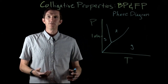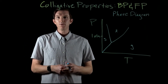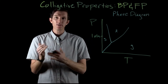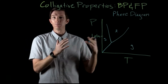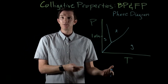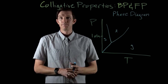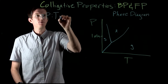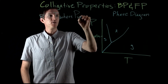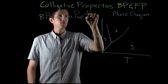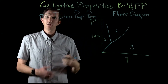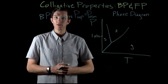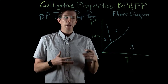In our previous video we looked at the colligative property of vapor pressure, and now we want to see how vapor pressure being decreased at every temperature for a solution relative to a pure solvent affects boiling point and freezing point. Going back to how we define boiling point: this is the temperature where the vapor pressure equals the atmospheric pressure, and we typically talk about this with respect to the normal boiling point, where atmospheric pressure is one atmosphere.